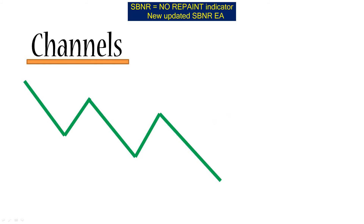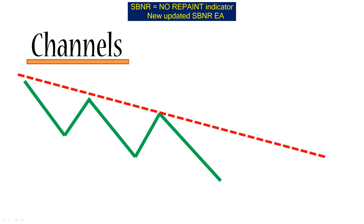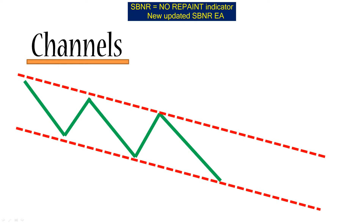Next we're going to look at a downward channel. Here we have a downward trend and we can draw a resistance line. If we copy that line, we can see that very often the price will also follow the copied line — it won't break through, it will bounce off that line. Channels are very common on the forex market, as you'll see from our live trading on a real account further in this course.